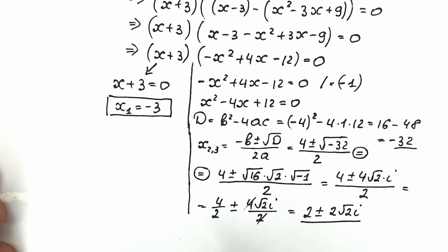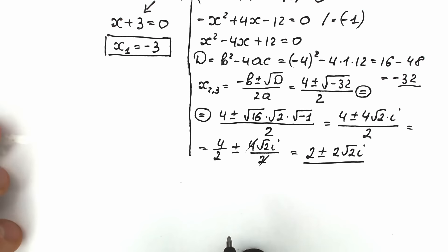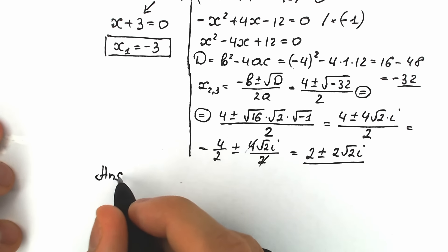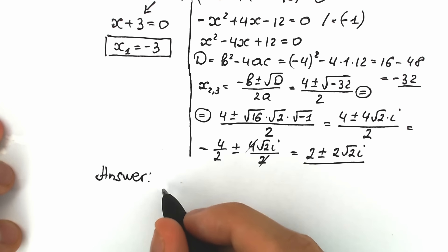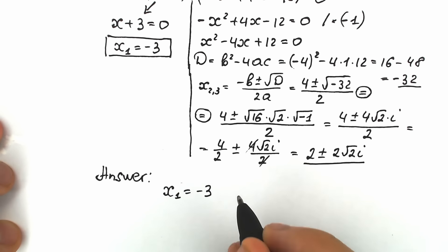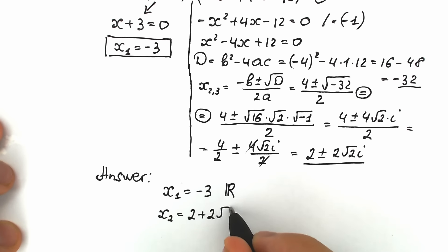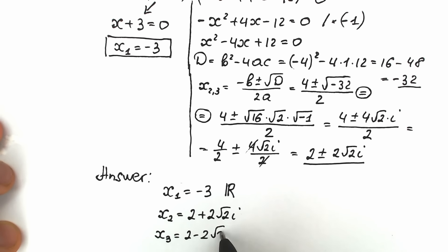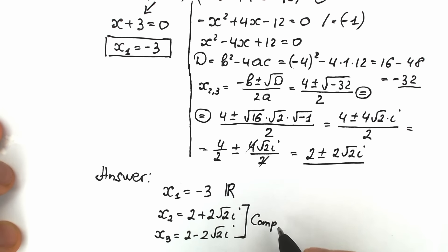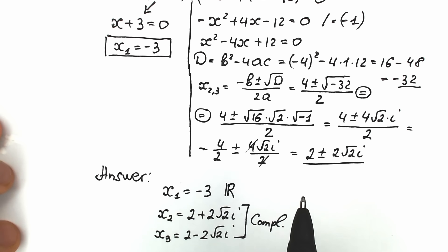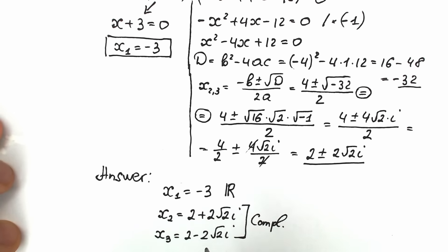Let's write our final answer. x₁ equals minus 3 — this is our real number root. x₂ equals 2 plus 2 root 2 times i, and x₃ equals 2 minus 2 root 2 times i — these are our complex roots. Since the original equation had x cubed, we can have no more than 3 roots: 1 real and 2 complex.